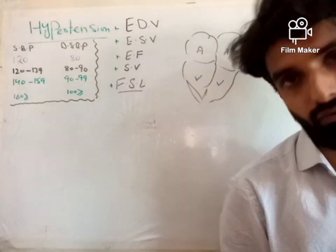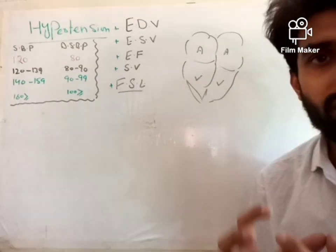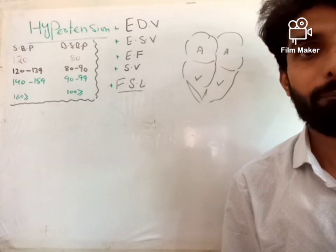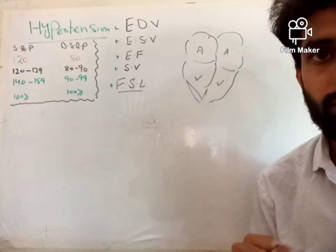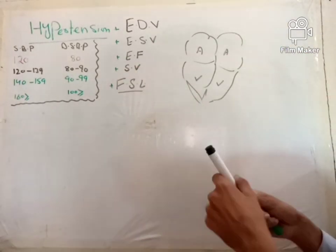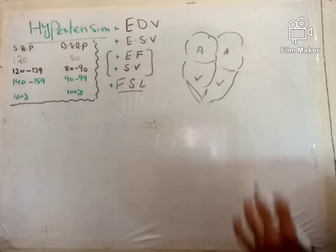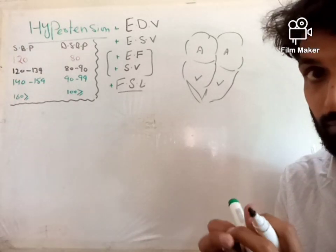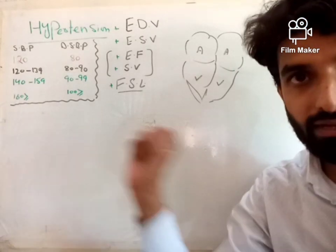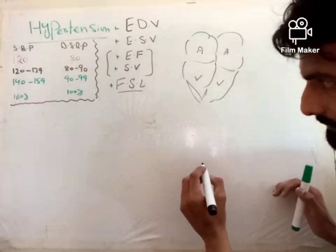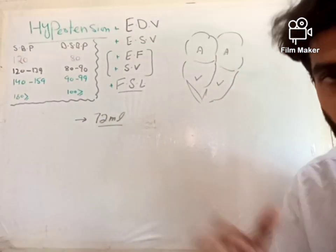Now what is ejection fraction? Ejection fraction is basically the percentage of blood that has been ejected out per contraction. There's no need to confuse between stroke volume and ejection fraction. Stroke volume is the volume of blood ejected per contraction, per beat — approximately 72 ml on average in a normal human being.